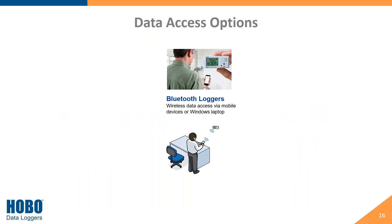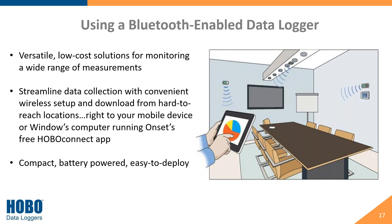The next option is Bluetooth data loggers. Just like a Bluetooth speaker, our data loggers work in essentially the same way, just a bit more simplified. Using a Bluetooth data logger is a versatile, low-cost solution for monitoring a wide range of measurements, including temp and RH, AC current, DC current, AC voltage, and DC voltage. It streamlines data collection with convenient wireless setup and download from hard-to-reach locations, downloading right to your mobile device or a Windows computer running our free HOBO Connect app. These are compact, battery-powered, and easy to deploy.